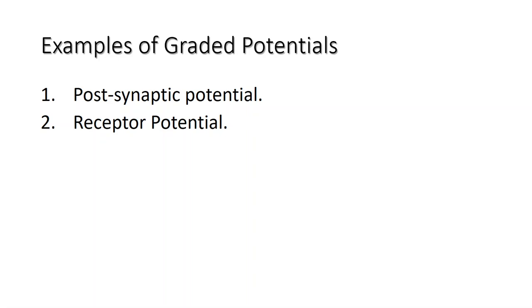This is called a receptor potential. For sensory neurons in our skin such as free nerve endings, graded potentials develop in the dendrites that influence the generation of an action potential in the axons of the same cell. This is called a generator potential.